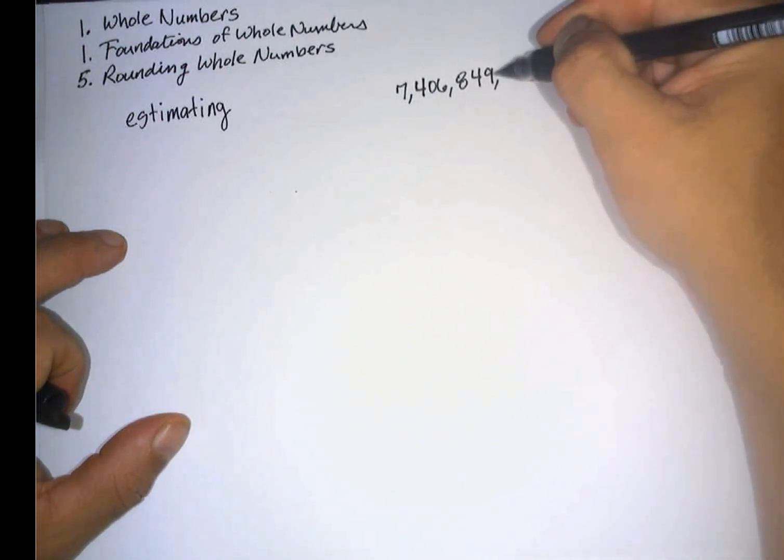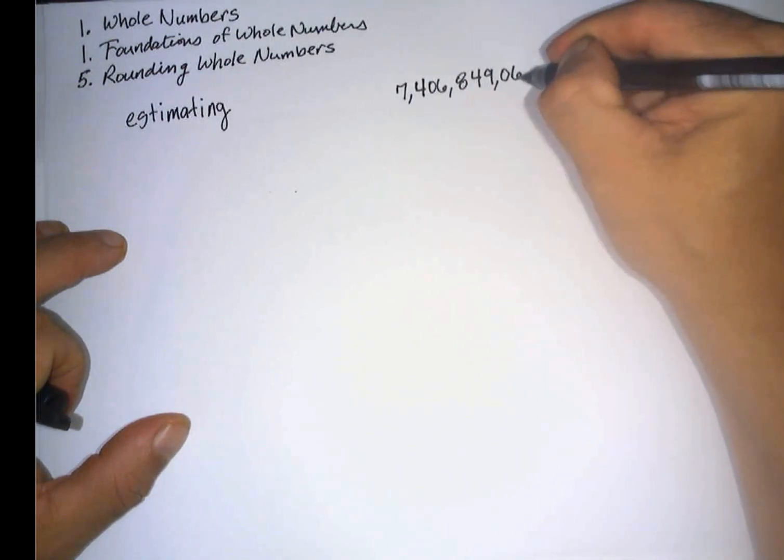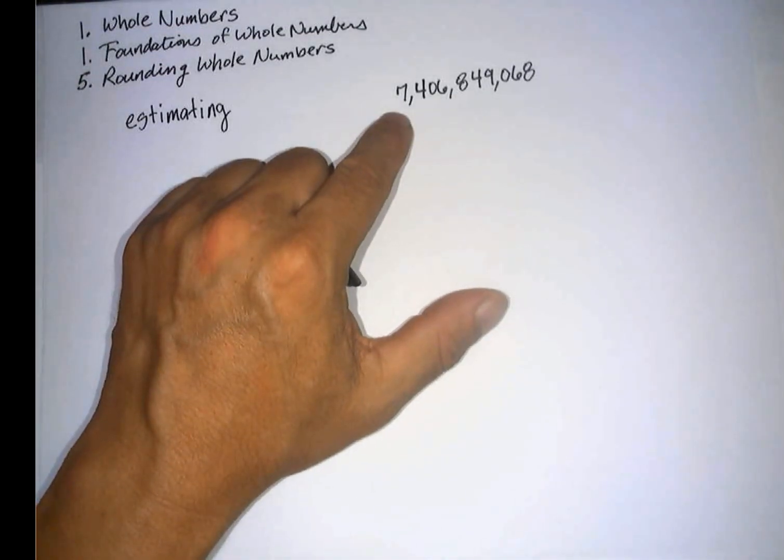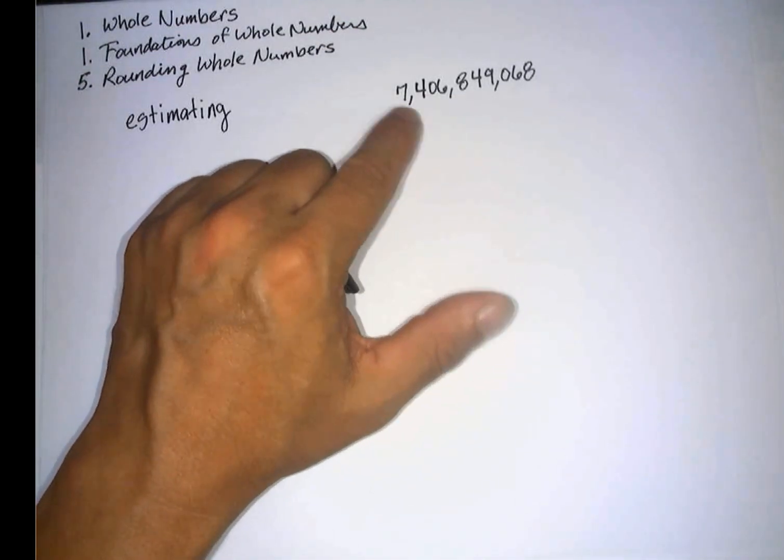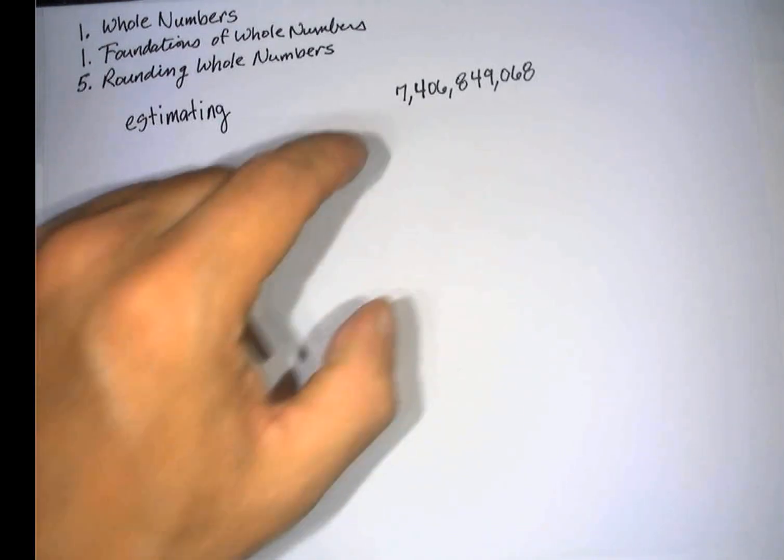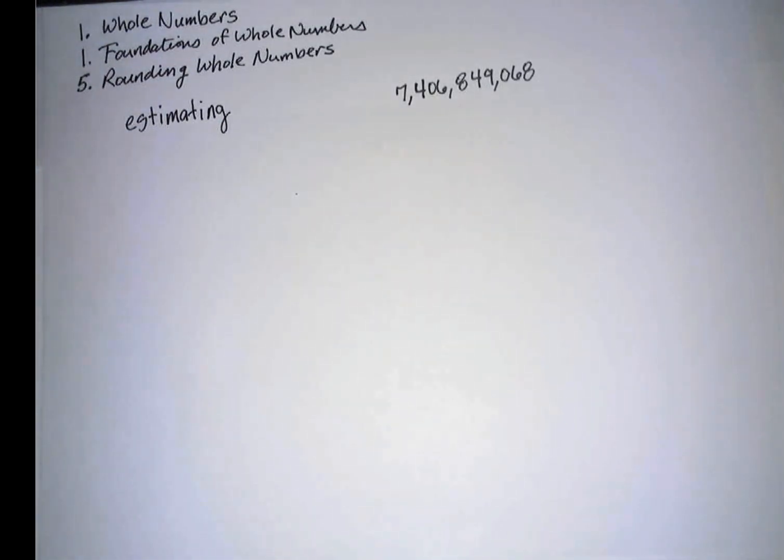If somebody asks you, what is the population of the Earth, you're most likely not going to turn around and answer 7,406,849,068. No, what you're going to do is you're going to round this number and say, oh, it's about 7 billion. Or you might even get a little more accurate and say 7,400,000,000. And what we just did was we rounded that.